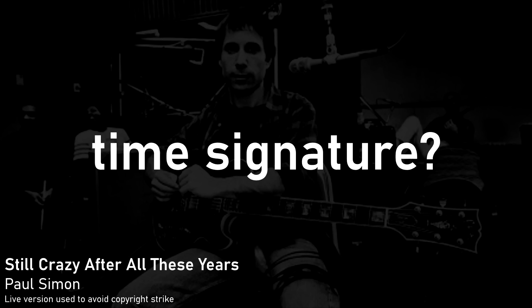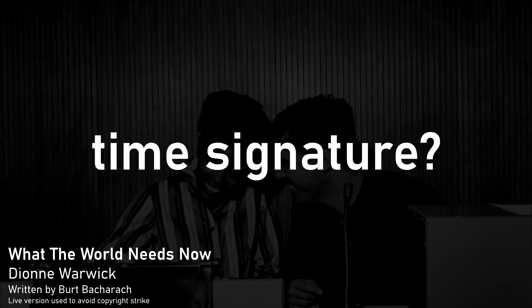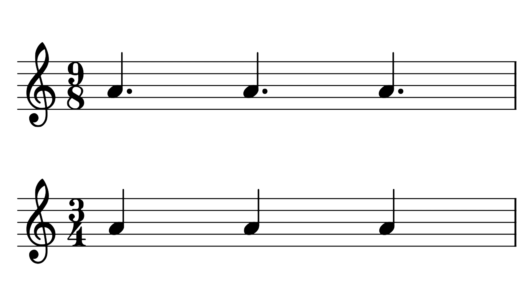If you said these examples were in 3/4, then that is technically correct. However, you could have also said 9/8. These two songs are examples of what's often called a jazz waltz — in other words, they're in swung 3/4 time. We could write them down in 3/4 with an instruction to swing the rhythm, or alternatively write them down as 9/8. 9/8 and 3/4 both have three strong beats in the bar, but whereas in 3/4 these strong beats divide down into two eighth notes, in 9/8 these three beats divide down into three eighth notes — and dividing down into three eighth notes gives it a swing feel.